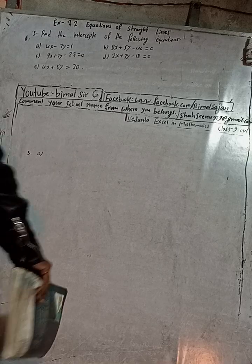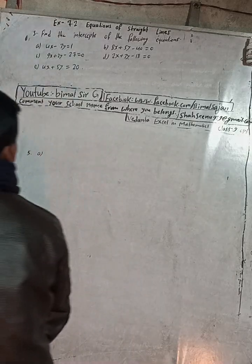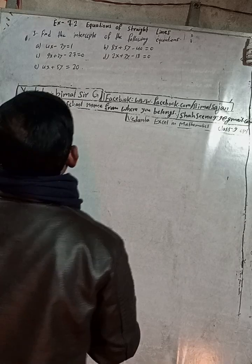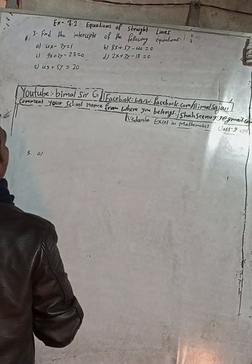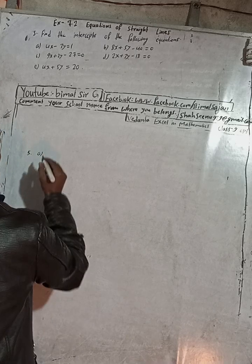Hi class 9 and 10 students, welcome back to Bhimalsarjy YouTube channel. This is question number 5, exercise 7.2, equations of straight lines, Vedanta Excel in Mathematics class 9 optional mathematics. Check the playlist — you will get a lot of solutions, and if you don't find them, comment me. Now here, find the intercepts of the following equations.